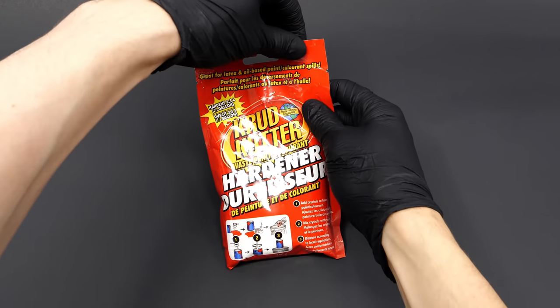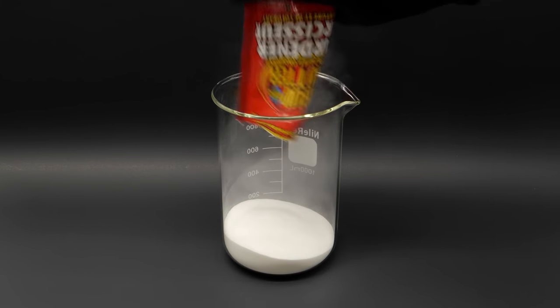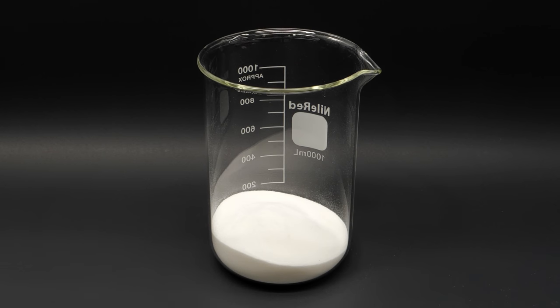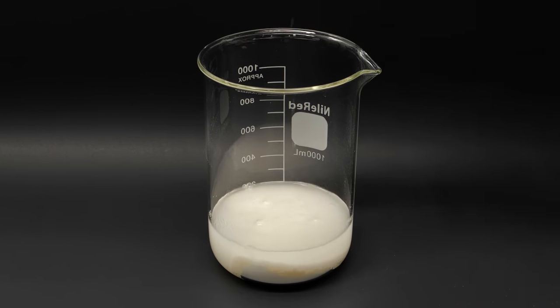I'm also gonna need some crud cutter, which is made of something called sodium polyacrylate. With all this in the beaker, I now need to add 125 mls of the alcohol.